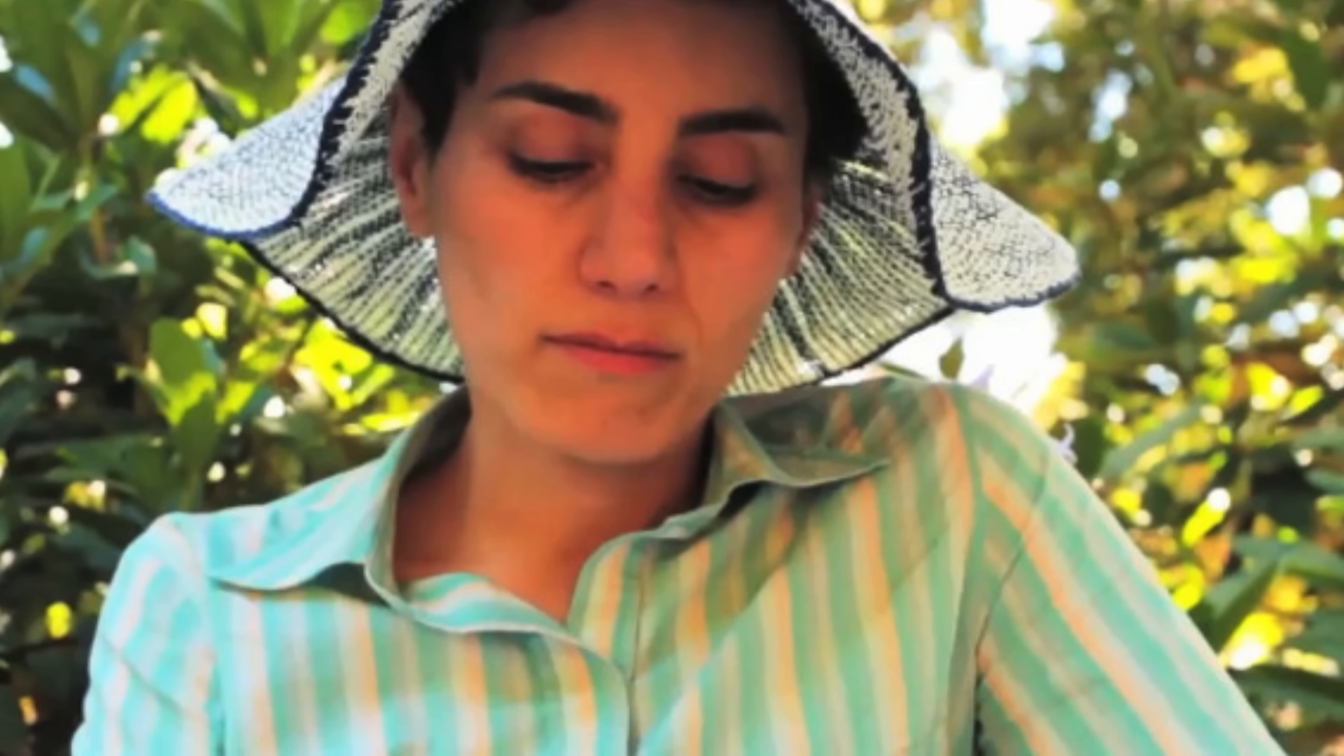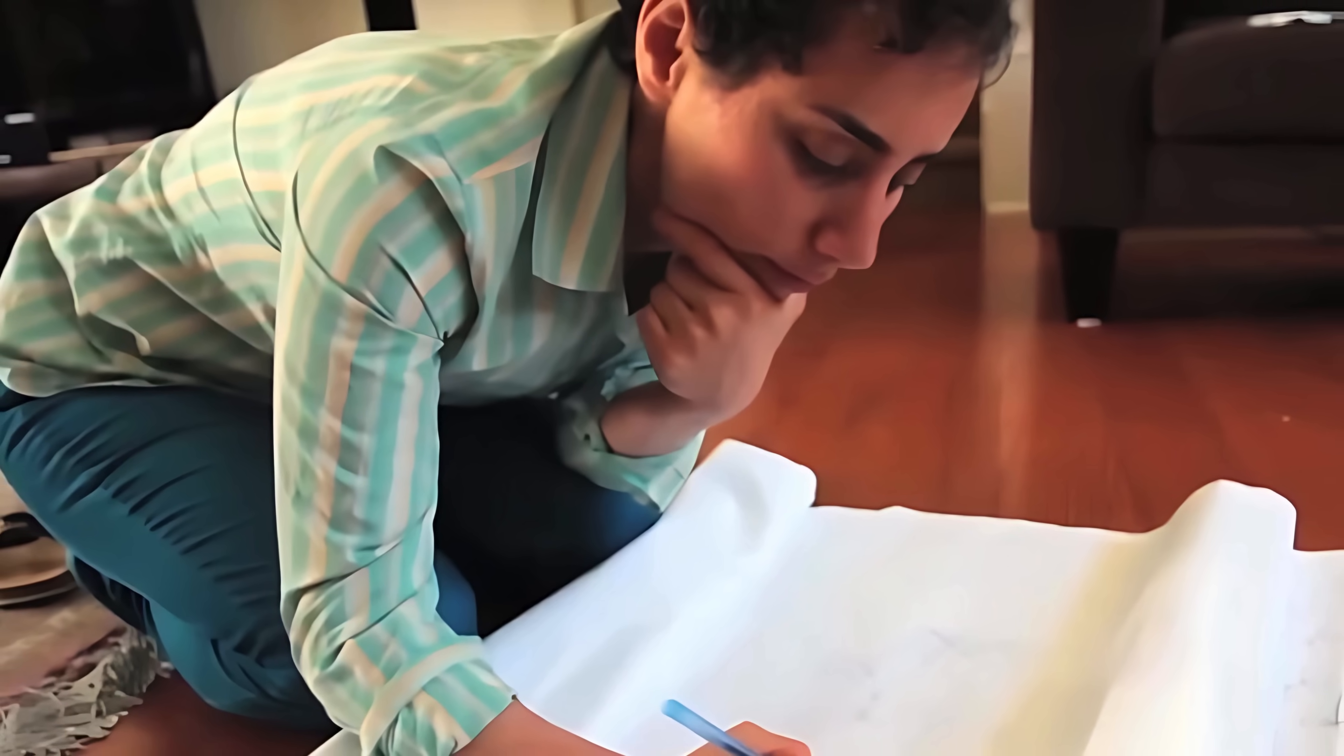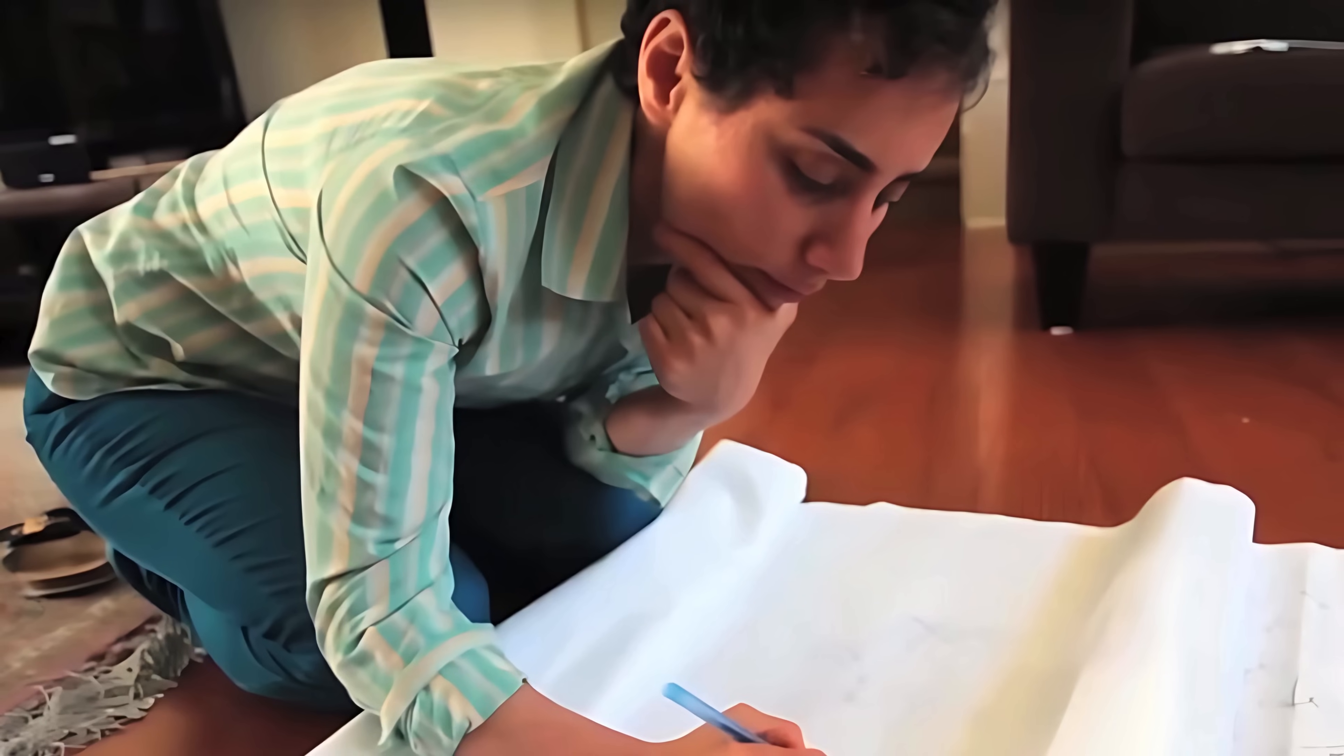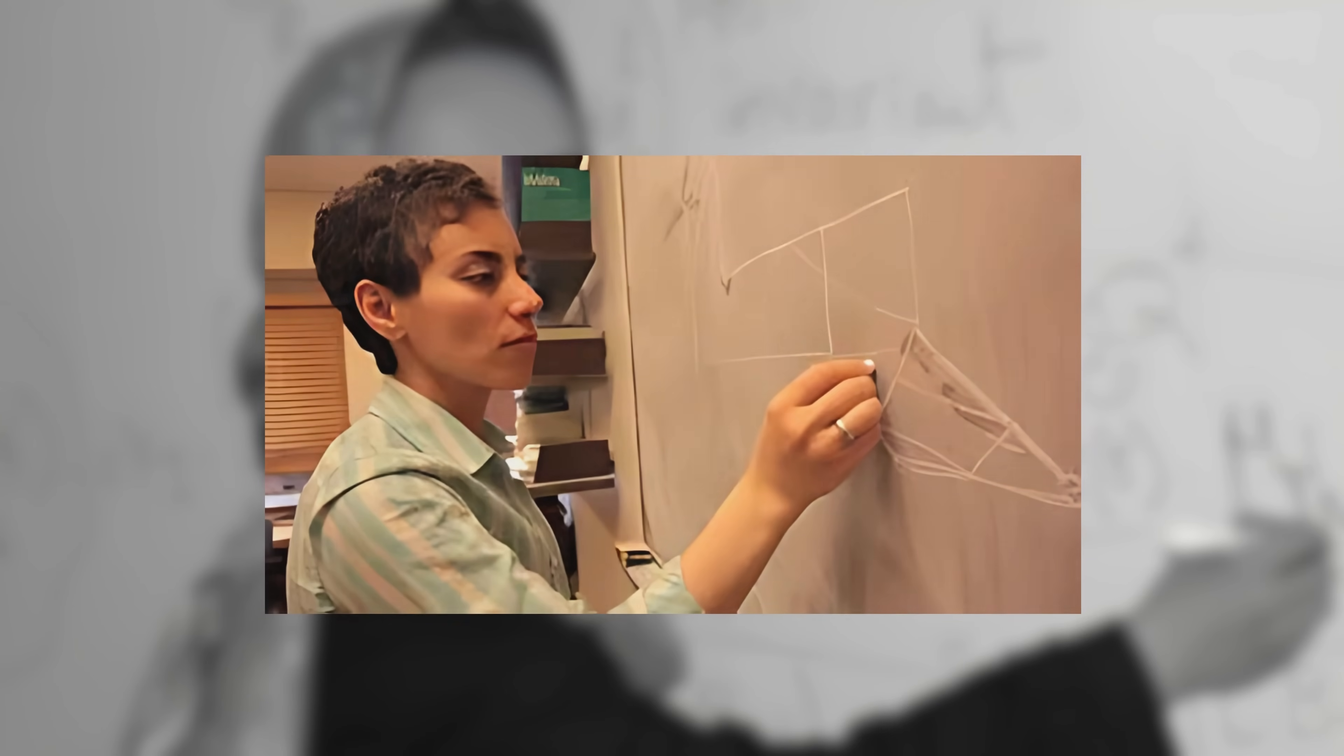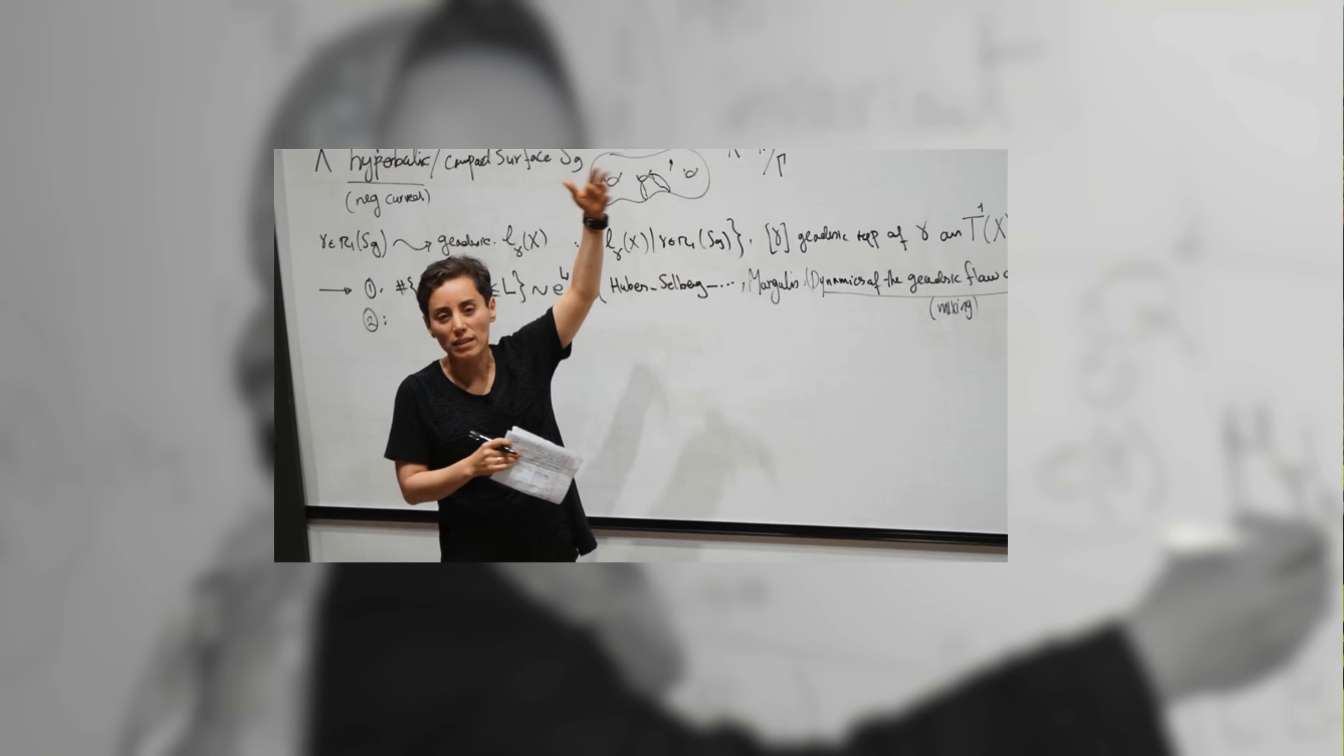Maryam Mirzakhani was famously modest and deeply private, yet beneath her quiet demeanor was an indomitable spirit, a thinker with an uncanny ability to see beauty in complexity. Colleagues describe her as quietly relentless, a mathematician who pursued questions not for recognition but from genuine curiosity and an intense passion for discovery.